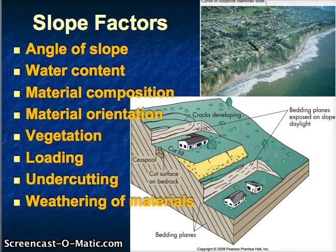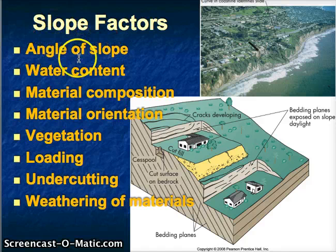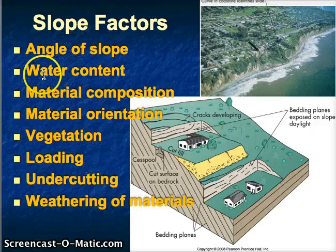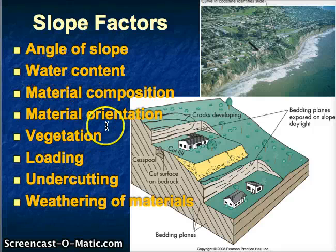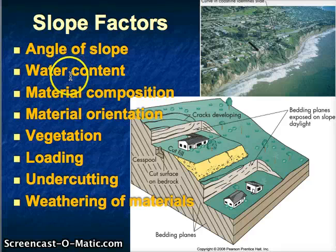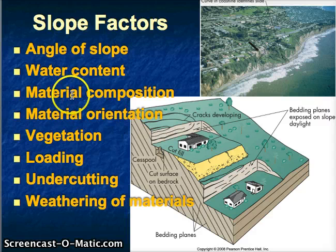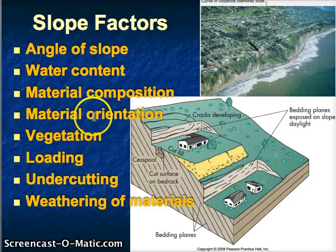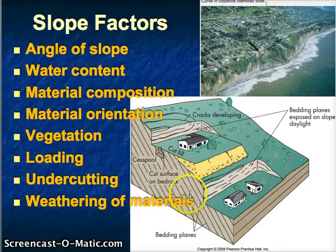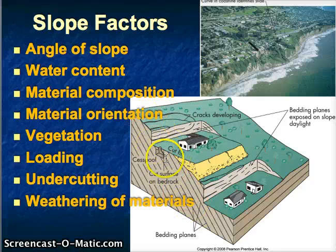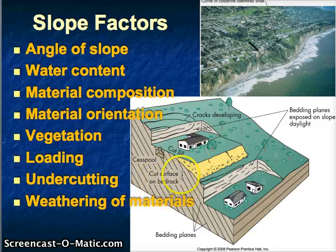Slope factors are actually pretty logical. The angle of the slope is probably the single most important factor. The second most important is water content — we see water as a trigger for a lot of landslides, happening after large rainstorms as it loosens the material. Material composition and orientation are also important: how strong is the earth material holding up the slope? If bedding planes are parallel to the slope, they give less support and things are more likely to give way.